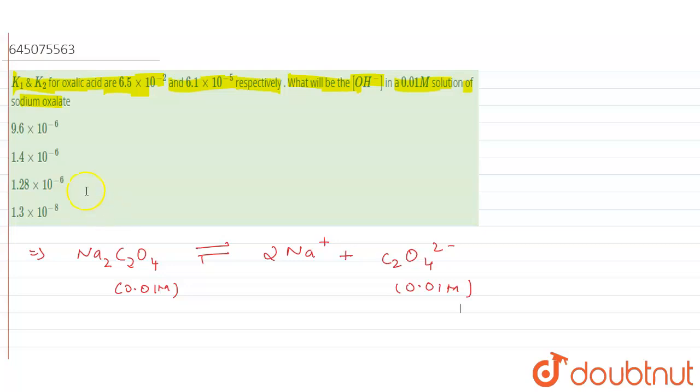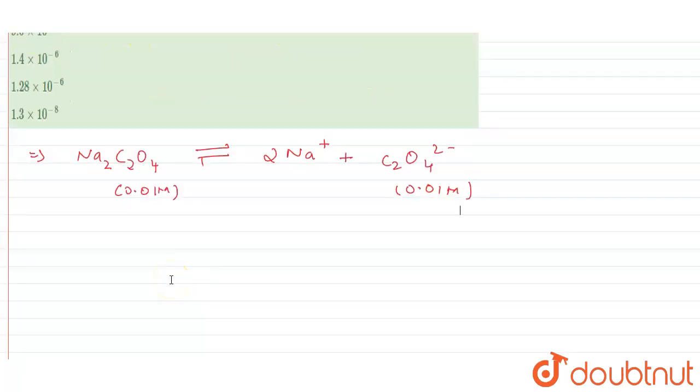Now in the next step, to obtain HC₂O₄⁻, we have to do the hydrolysis so that we can find OH⁻ concentration. For finding OH⁻ concentration, we have to do the hydrolysis of the oxalate ion.